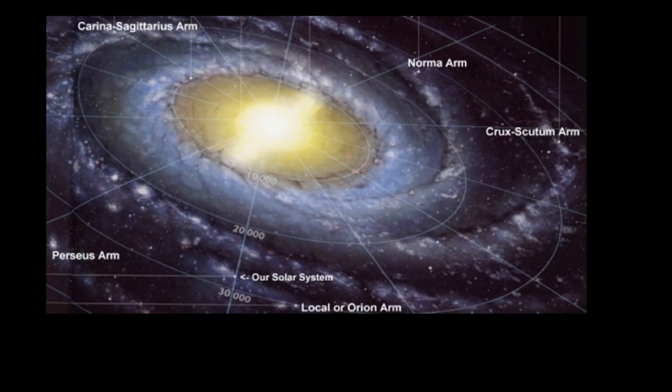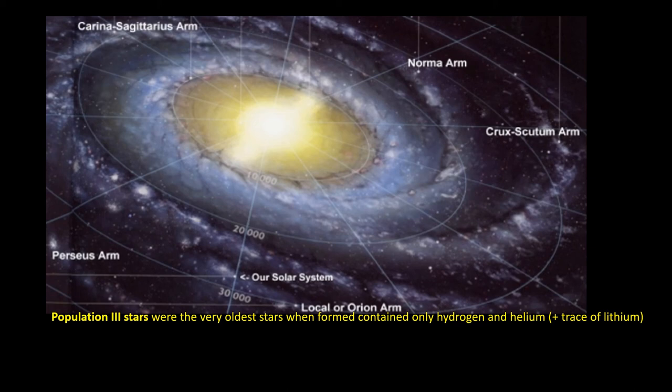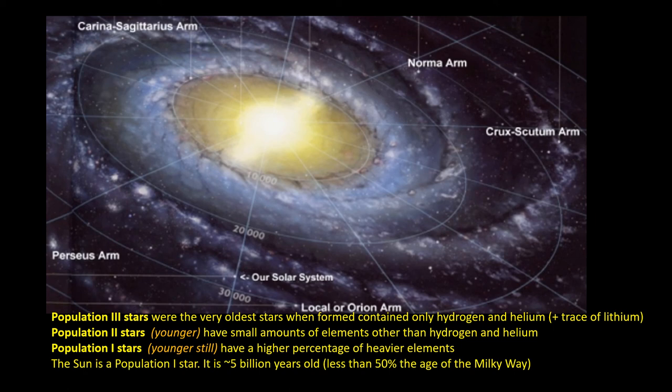Around the Milky Way is a halo containing old stars called Population II stars, which don't have many elements other than hydrogen and helium. The small traces of heavier elements will have come from earlier Population III stars. Because elements such as iron, oxygen, and silicon are only present in minute quantities in these Population II stars, they cannot be orbited by rocky planets such as Earth, Mars, and Venus.